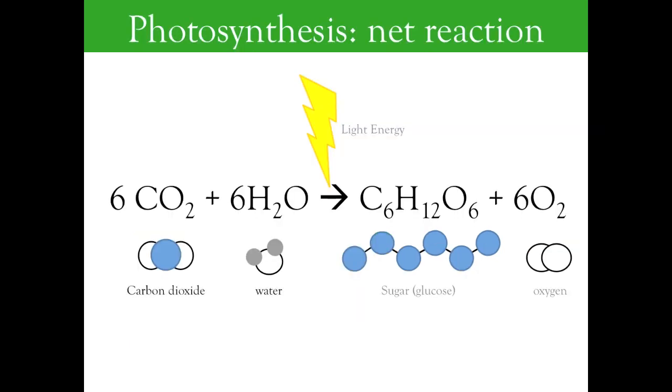Photosynthesis requires both carbon dioxide and water as inputs. Using a series of enzymes and conversions, plus the addition of light energy, photosynthesis converts these inputs into sugar and oxygen.